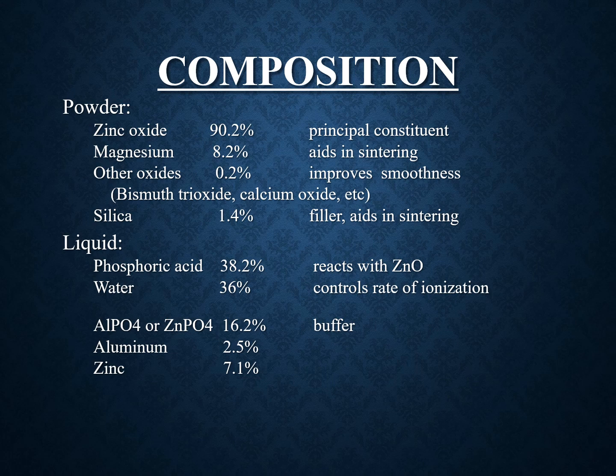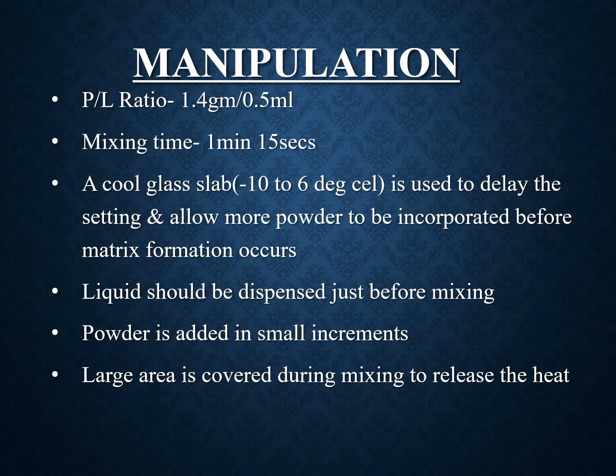The composition of zinc phosphate: the powder contains zinc oxide, magnesium oxide, other oxides, and silica. The liquid contains phosphoric acid, water, zinc phosphate, aluminium, and zinc. For manipulation, the powder-to-liquid ratio is 1.4 g to 0.5 mL; mixing time is 1 minute 15 seconds. A cool glass slab is used to delay setting, allowing more powder to be incorporated before matrix formation. Liquid should be dispensed just before mixing, and powder is added in small increments over a large area to release heat.